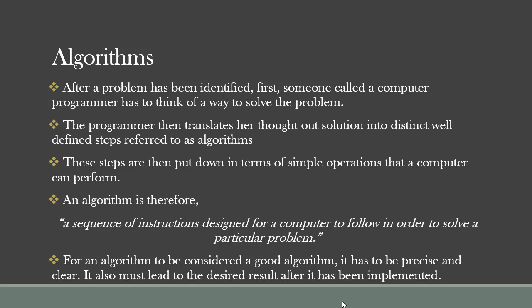So when, after a problem has been identified, someone called a computer programmer has to think of a way to solve the problem. That task of telling the computer what to do and how to do it belongs to a computer programmer. Basically, a computer programmer is a person who writes programs. Later in this course, you're going to get to know about computer programs. A computer programmer is someone who writes computer programs, and writing computer programs is all about telling the computer what to do and how to do it.